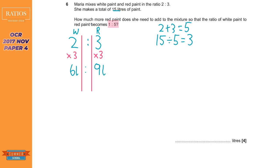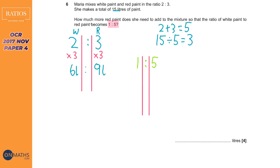At the moment we have six liters of white paint. This ratio one to five needs to reflect the amount of white paint we have, so I'm going to write ratio one to five and convert it by multiplying both sides by six — labelling white paint and red paint — so one times six is six and five times six is 30.